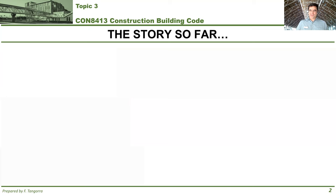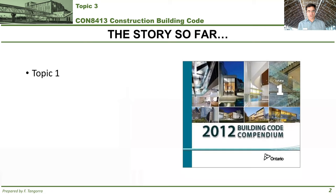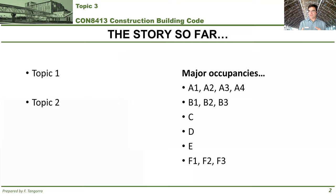So let's see where we are so far with the story. We started off with Topic 1, where you were introduced to the Ontario Building Code as a document — what it's there for, what its purpose is, how it's arranged, and how it's referenced. How all the contents are referenced in it, not by page number. Topic 2 was all about major occupancies — basically determining major occupancies.